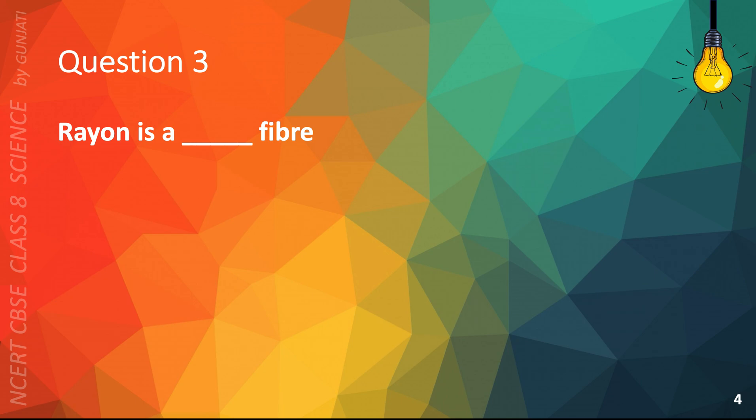Question 3. Rayon is a blank fiber. A. Natural, or B. Synthetic. The correct answer is B. Synthetic.